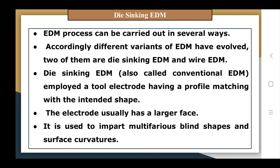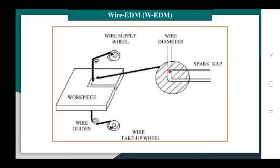Die-sinking EDM, also known as conventional EDM, employs a tool electrode having a profile matching the intended shape. The tool or electrode usually has a large profile and is used to impart blind holes, blind shapes, and surface curvature.